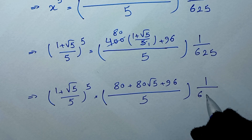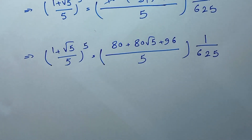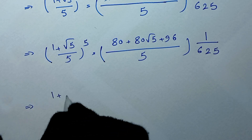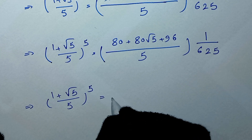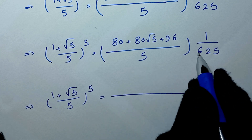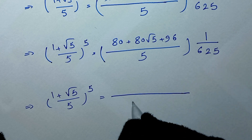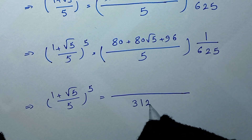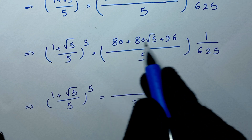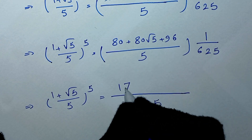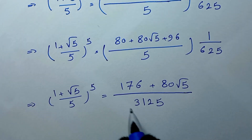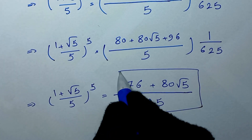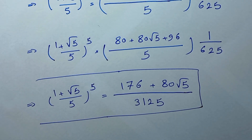So it will be 1 plus square root of 5 over 5, to the power of 5, is equal to — here 5 times 625 is 3125 — and 80 plus 96 gives 176, plus 80 times square root of 5, all over 3125. This is our final answer. Thank you for watching, don't forget to like and subscribe, and see you in the next video. Goodbye.